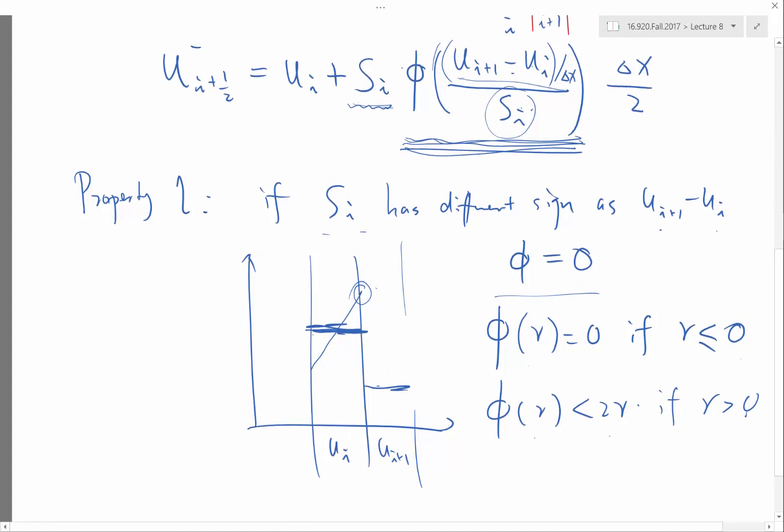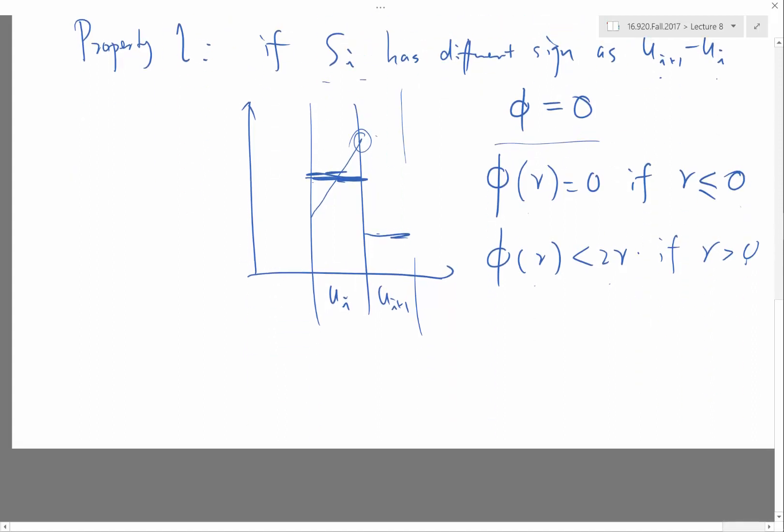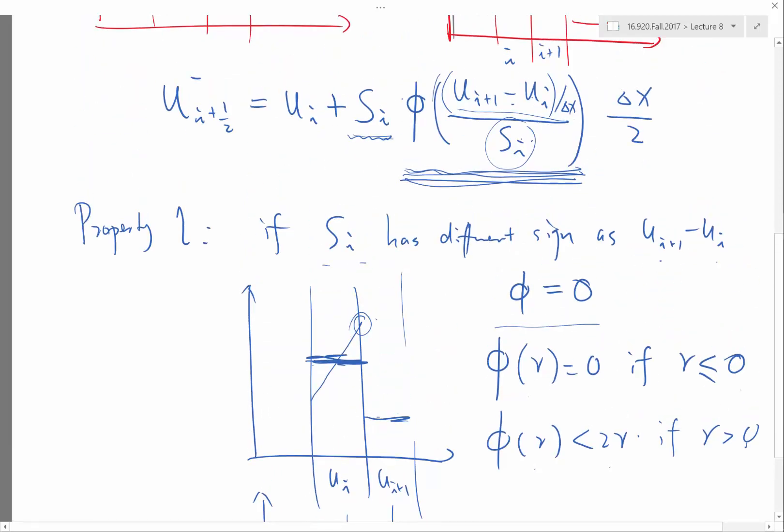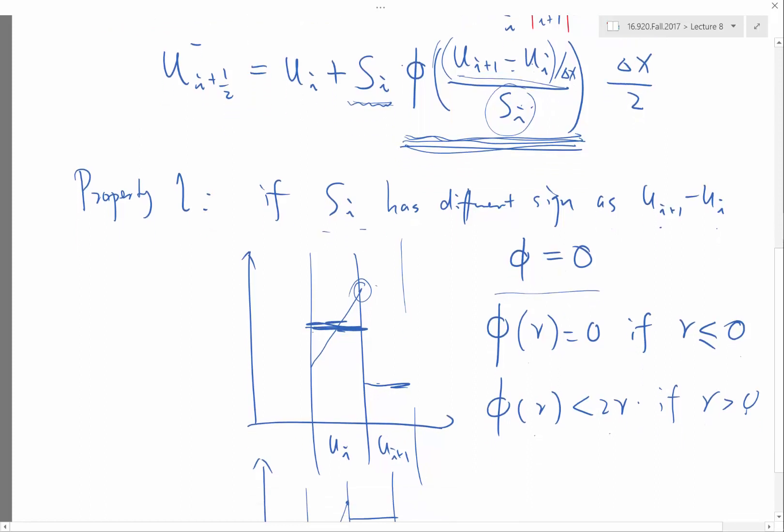that means I want to construct a slope. So that means I have a u_i here and u_{i+1} here. I want to construct a slope that exceeds over here. That's because it has to be less than actually less than 2.